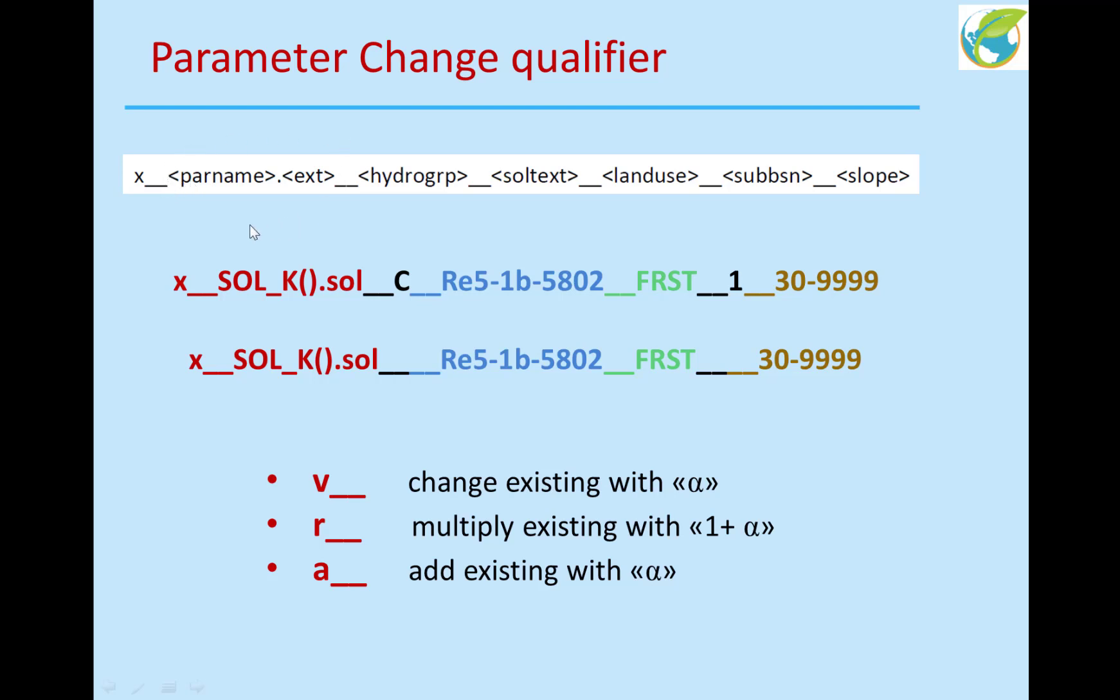In SWATCOP, we specify a parameter by its hydrologic group, soil texture, land use, sub-basin number, and slope. And then there is a qualifier.